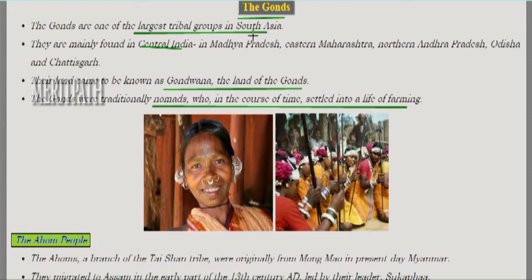The Gonds are the largest tribal group of South Asia. In India they were mainly found in central Indian regions such as Madhya Pradesh, eastern Maharashtra, northern Andhra Pradesh, Odisha, and Chhattisgarh. The place where they lived was called Gondwana, meaning the land of the Gonds. These people were originally nomads who travelled frequently, but later they settled into a life of farming and practiced agriculture.